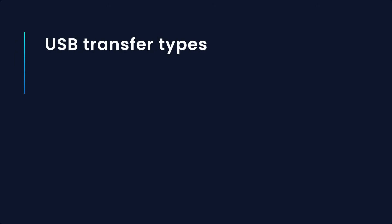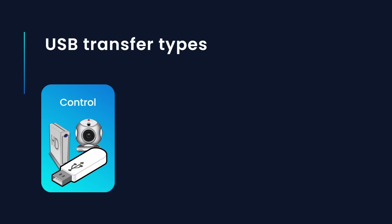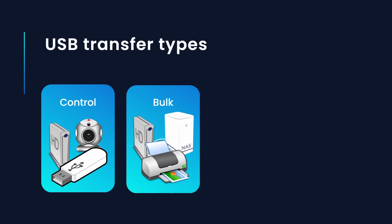The USB protocol implements 4 different types of data transfers. First, there are control transfers, which are small in size and are generally used to configure the device whenever it is connected to the host. Control transfers are usually present in every single USB device. Then there are bulk transfers, which are used to transfer large amounts of data with no data loss. Bulk transfers are used by printers, storage and network devices.